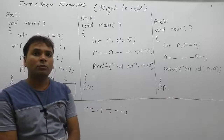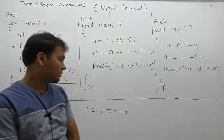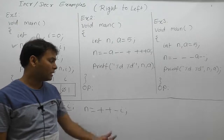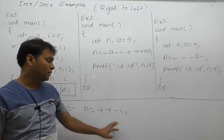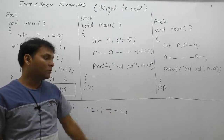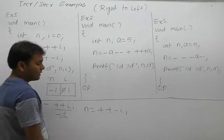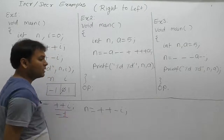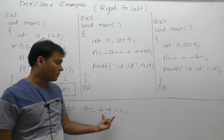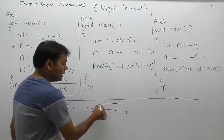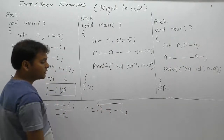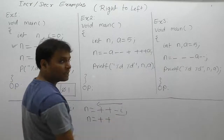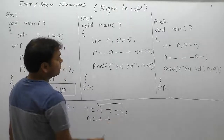We are discussing rules for unary operators. Unary plus-plus and minus-minus are only applicable to variables, not to values. From right to left associativity rule — in this case, it is not applicable for values. Both unary operators have exactly the same priority, and same-priority unary operators are solved from right to left.